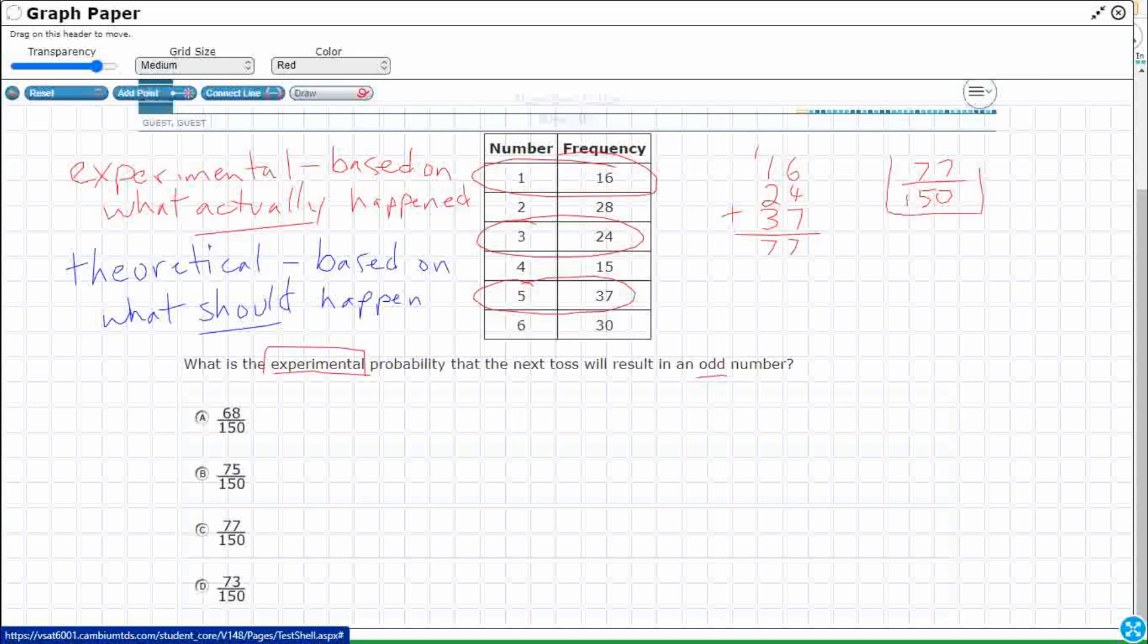77 out of 150 tosses were actually odd numbers. So what is the experimental probability? Well, it's going to be that 77 out of 150. It seems pretty simple, but that's not the theoretical probability. So we need to make sure we avoid the theoretical probability. Watch this.